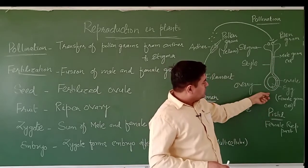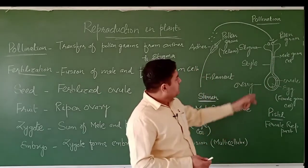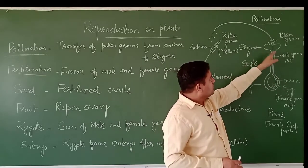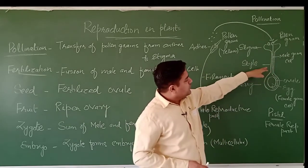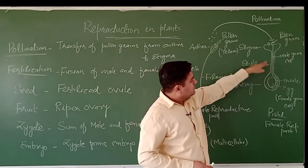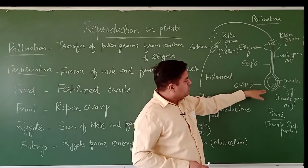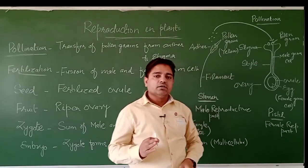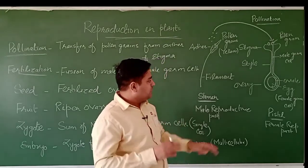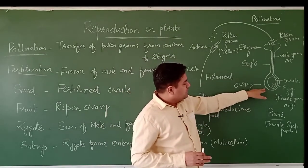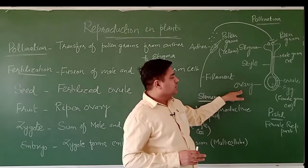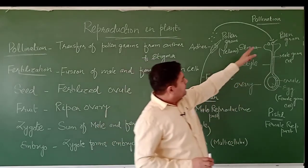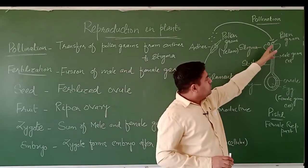The stigma is the female receptive part — the flat part on which the pollen grains land. The female reproductive part has three sections: the flat part is known as the stigma, the tube-like structure is known as the style, and the swollen part at the base is known as the ovary.